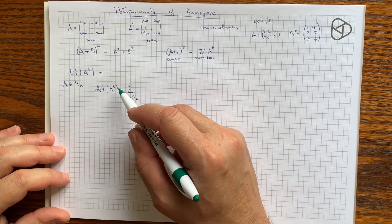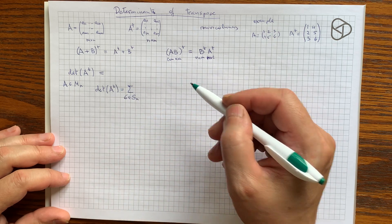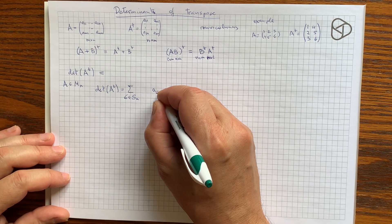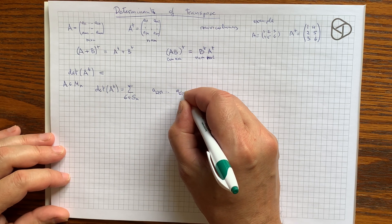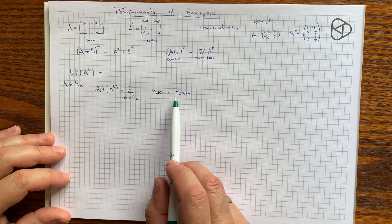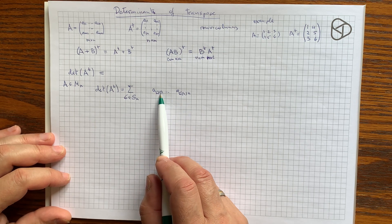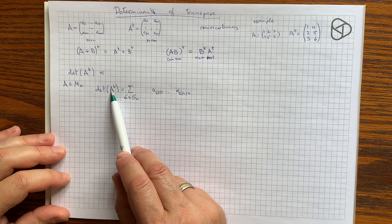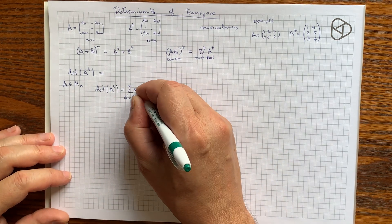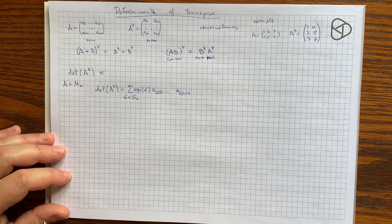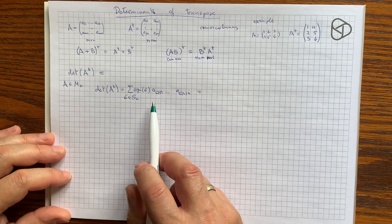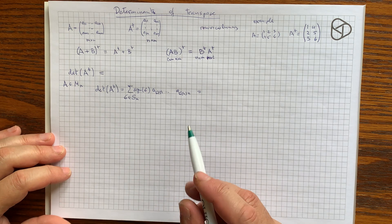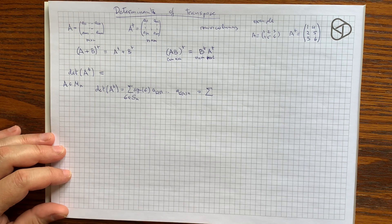The determinant of the transpose will be the sum over all permutations of N things of products of matrix entries taken from different rows and different columns. When we change matrix entries from A to A-transpose, we just swap the row and column positions. Before, we had entries taken from the first, second, and so on rows; now they will have to be columns. The matrix entries of the transpose sit in row i, column sigma(i), and written in terms of entries of A that becomes A[sigma(i)][i], and the sign will be the sign of the corresponding permutation.